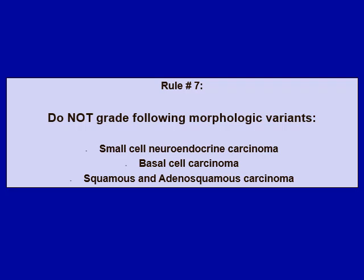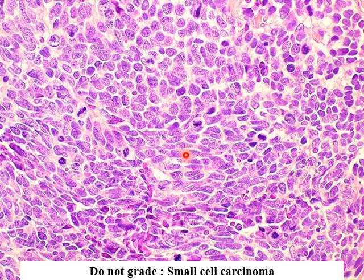Our final rule is that certain morphologies are not Gleason graded due to their therapeutic implications. This applies to small cell neuroendocrine carcinoma, basal cell carcinoma, and squamous and adenosquamous carcinoma. Here is an example of small cell high-grade neuroendocrine carcinoma — you can see nuclei with salt-and-pepper chromatin and numerous mitotic figures, classic oat cell features. When you see this, do not provide a Gleason grade; only grade if there is a component of conventional acinar differentiation, because these tumors are treated with platinum-based chemotherapy due to specific therapeutic implications.